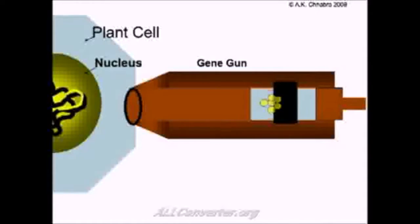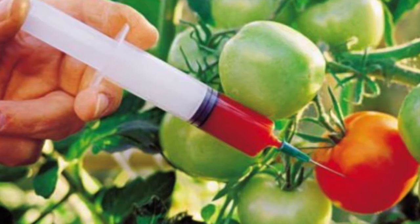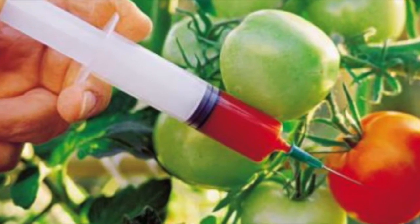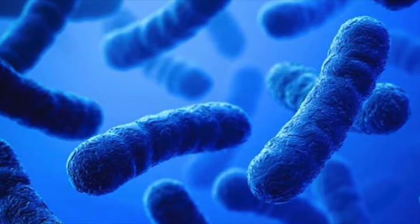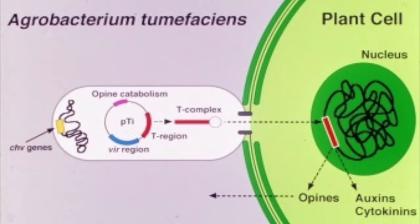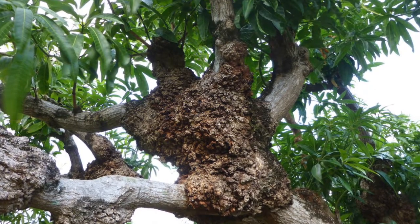The use of the gene gun is an efficient gene transfer while minimizing tissue or cell damage. Once inside the cell, the DNA integrates into the host genome. Another method of genetic modification is the use of a bacterium or virus. The Agrobacterium tumefaciens is a biological vector that transfers part of its DNA to plants in nature.